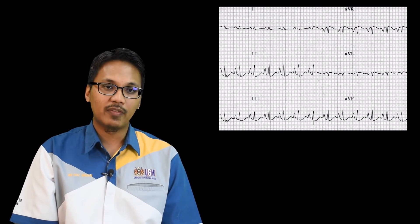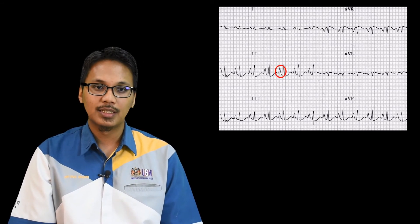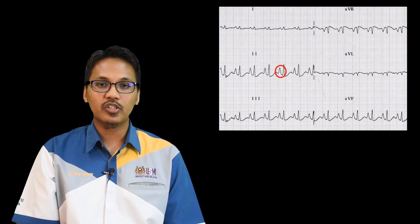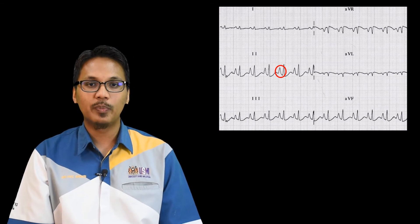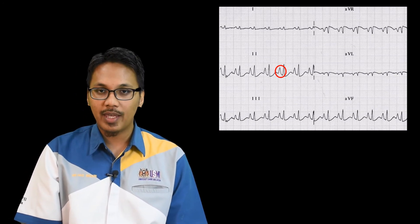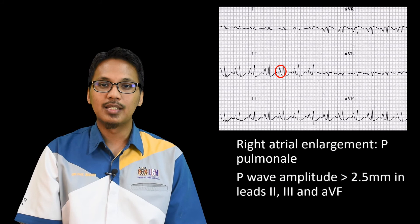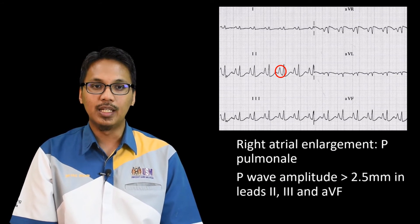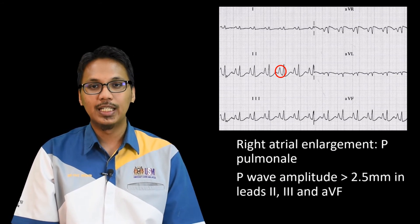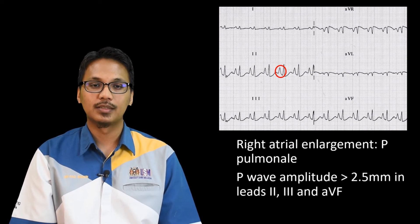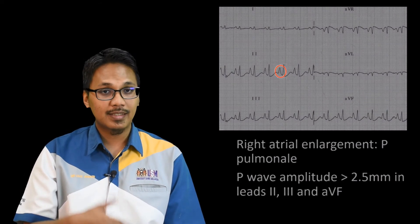As you can see from the red circle, there is an obvious large and peaked P-wave, which when measured is more than 2.5 mm in lead 2, lead 3, and lead AVF.